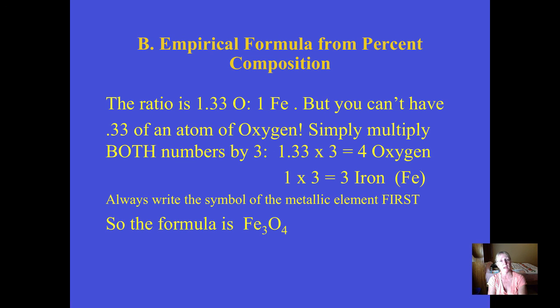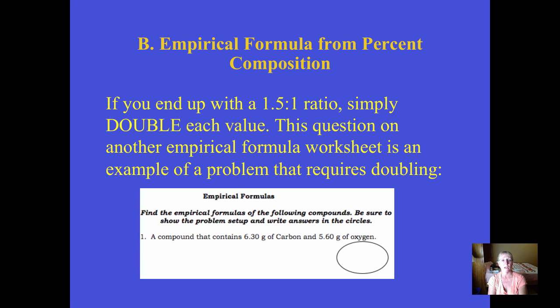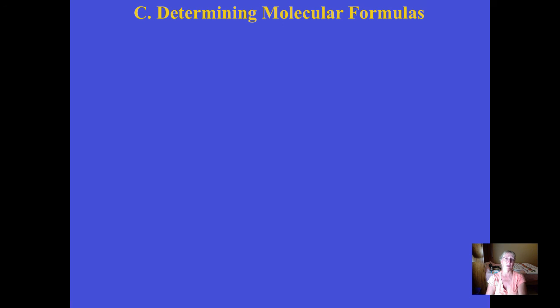That's how you cope when the dividing step gives you a fraction too big to round. Look in your packet for the empirical formula worksheet with ovals for answers — problem number one ends up with a half in there. If you get thirds, multiply by 3; if you get halves, double everything. Our next skill is molecular formulas. If you can do empirical formulas, molecular formulas should be easy — it's essentially the same thing with one additional simple step of multiplying. See you at the next podcast — take care.